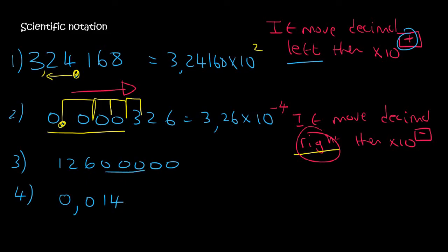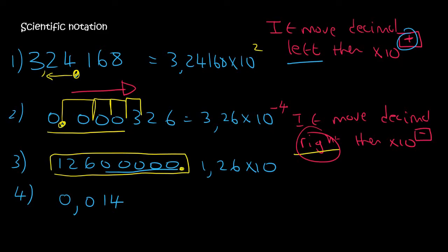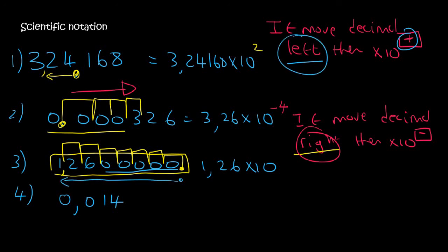The next one — all these zeros at the end, so we ignore that and say 1, 2, 6 times 10. If there is no decimal, it's at the end. It's been moved 1, 2, 3, 4, 5, 6, 7 places — from the back to the front, so that's 7 places to the left, making it a positive 7: times 10 to the 7. For the last one, there are some zeros in the front, so we ignore that and say 1, 4 times 10. The decimal was over here, now it's been moved 1, 2 places to the right — and when it's moved to the right, it's negative 2: times 10 to the minus 2.